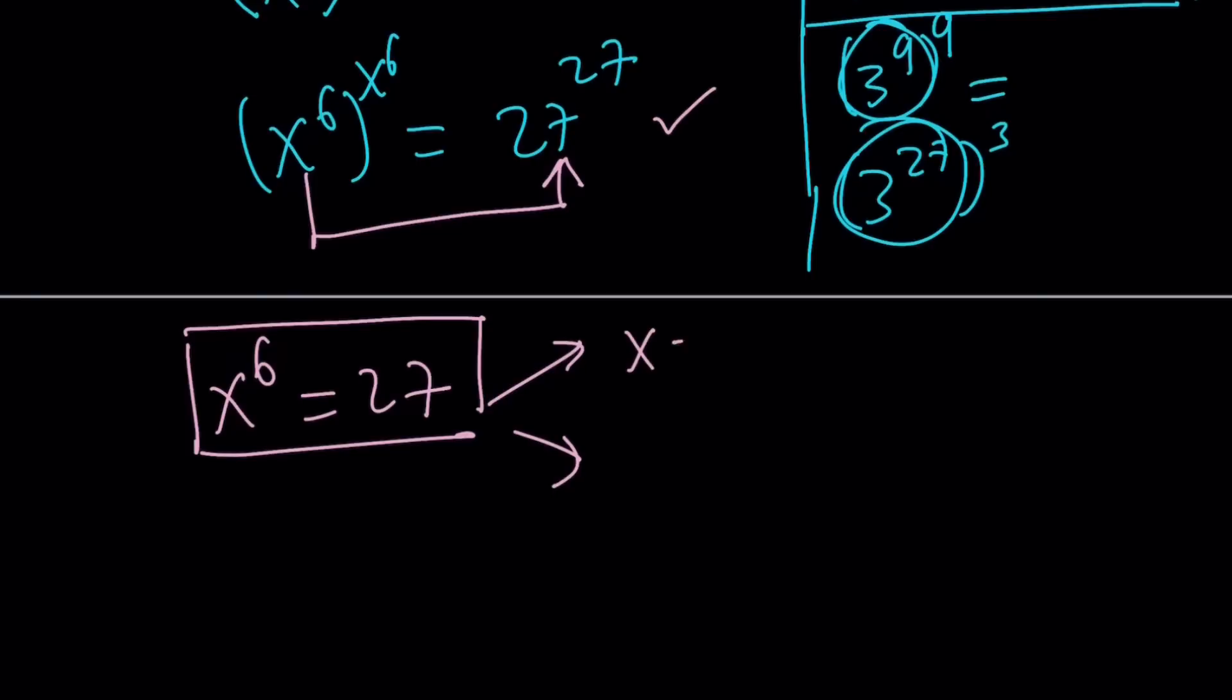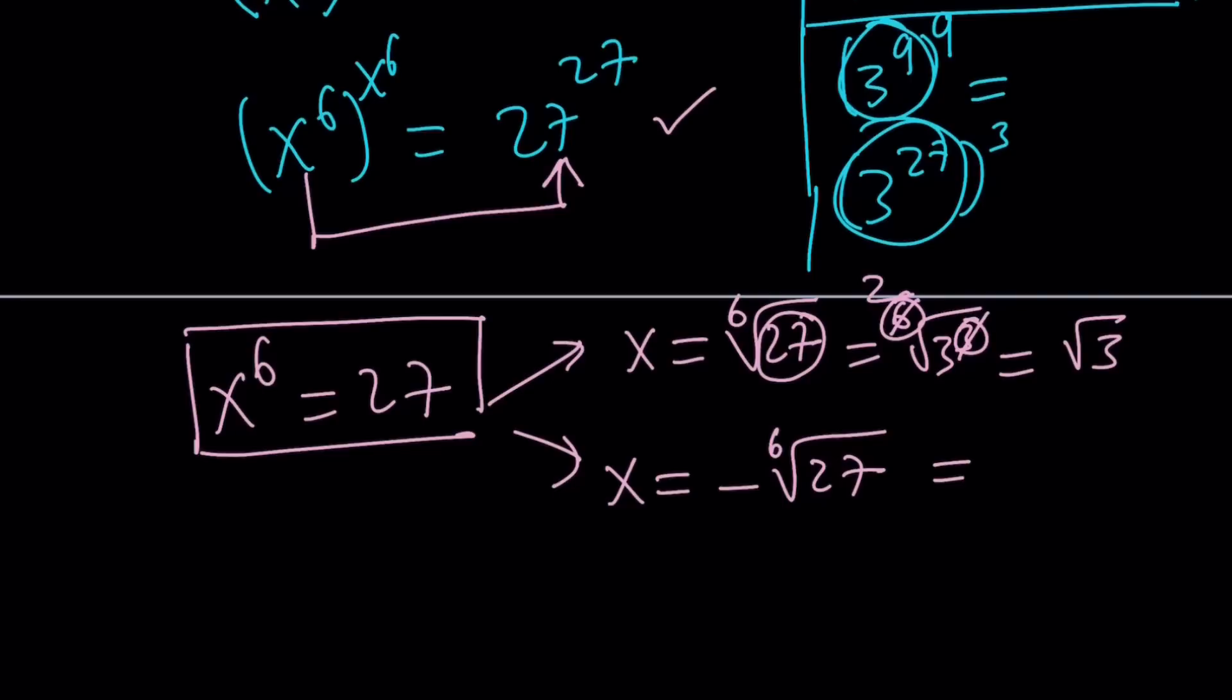One of them is the 6th root of 27, which we can simplify. And the other one is the opposite of that. How can we simplify this? This is 3 to the third power. And then, the 3 and the 6 kind of cancel out, like fractions. So, this basically becomes square root of 3. And this becomes negative square root of 3.